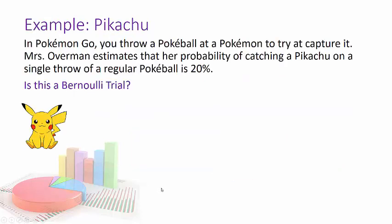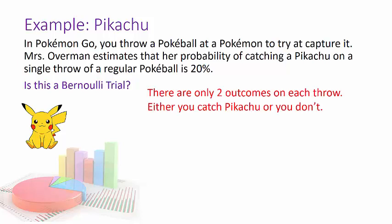In Pokémon Go you throw a Pokéball at a Pokémon to try to capture it. I estimated my probability of catching a Pikachu on a single throw of a regular Pokéball to be 20%. Is this a Bernoulli trial? We assume there are only two outcomes on each throw — you either catch the Pikachu or you don't — and the Pikachu won't run away. P = 0.20, Q = 0.80, and each throw is independent.